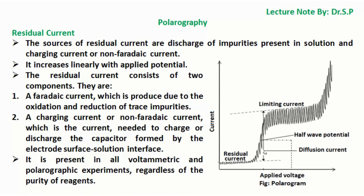The sources of residual current are the discharge of impurities present in solution and charging current or non-Faradaic current; it increases linearly with applied potential. The residual current consists of two components: a Faradaic current, produced due to the oxidation and reduction of trace impurities, and a charging current or non-Faradaic current, which is the current needed to charge or discharge the capacitor formed by the electrode surface-solution interface. This is also known as condensation current or charging current, and it is present in all voltammetric and polarographic experiments regardless of the purity of reagents.